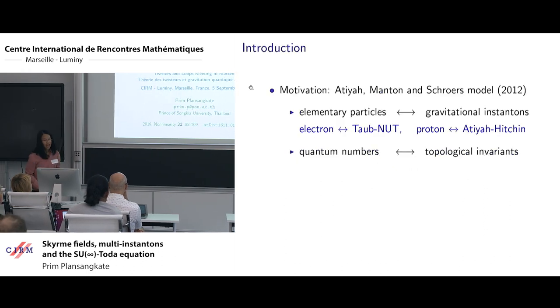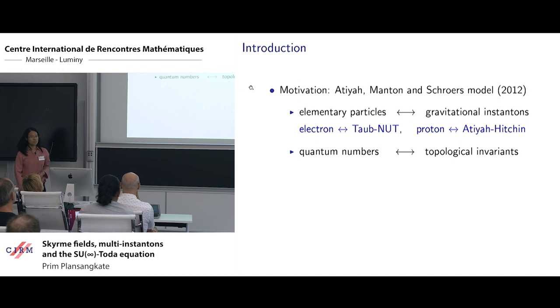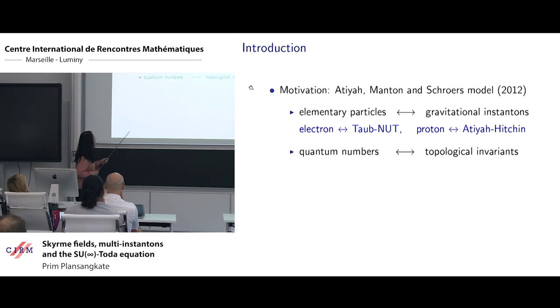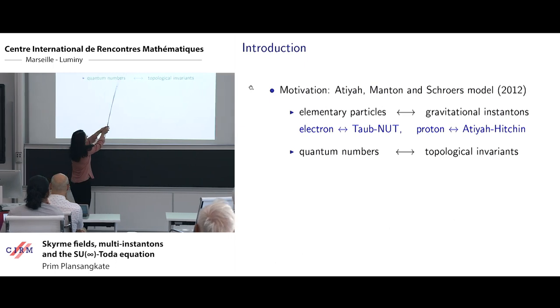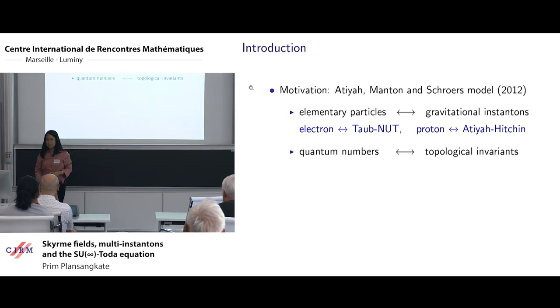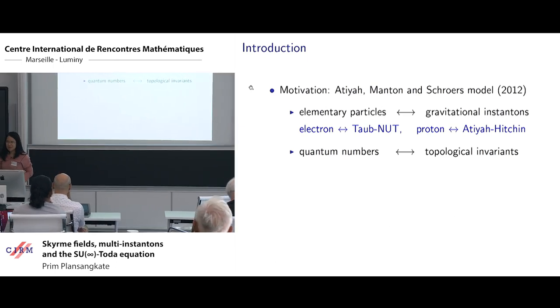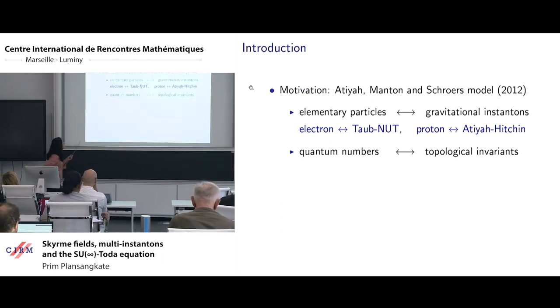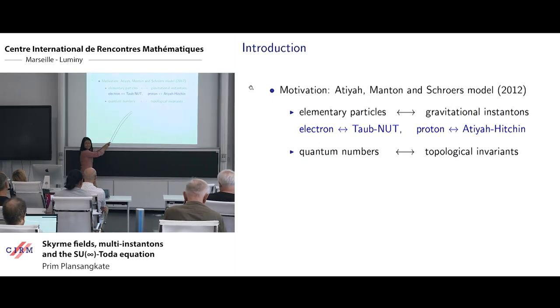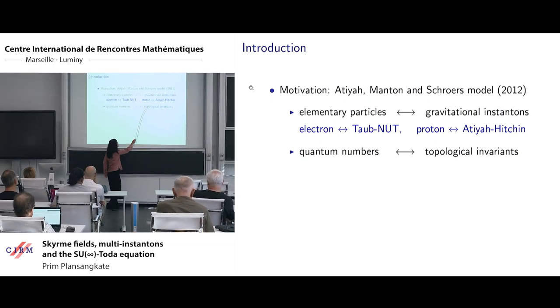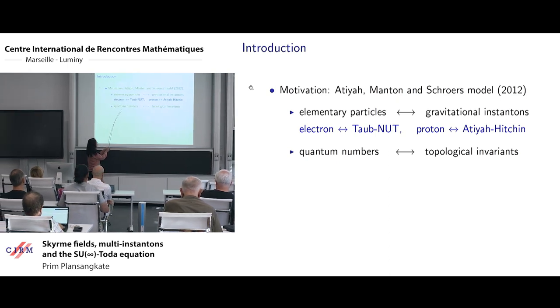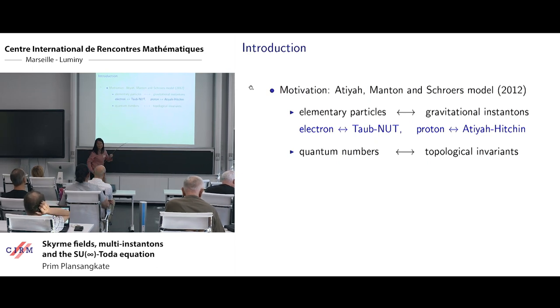The motivation for this work comes from the work of Atiyah, Manton and Schroers, who proposed a model which describes elementary particles by gravitational instantons. For example, the electron by the Taub-NUT instanton, and the proton by the Atiyah-Hitchin instanton.